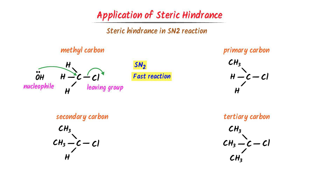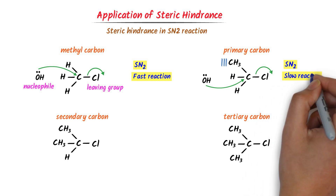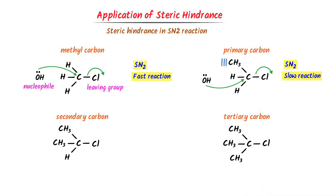Secondly, in the case of primary carbon, the methyl group blocks or shields the central carbon from nucleophilic attack. The hydroxide ion cannot attack from this direction, but there is still another path. Thus, the hydroxide ion attacks on the central carbon and chlorine leaves the molecule. It is an SN2 reaction, but it is a slower reaction compared to the first one.